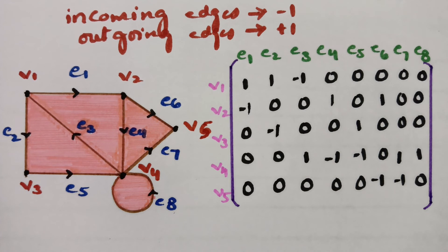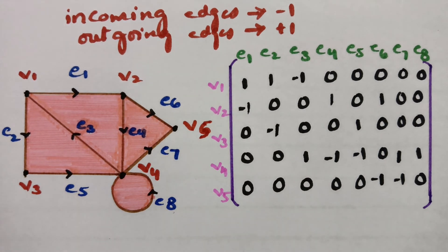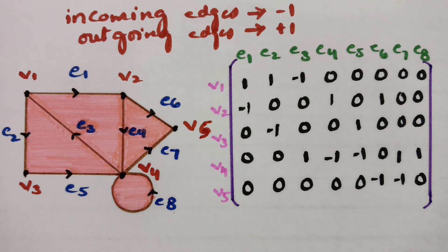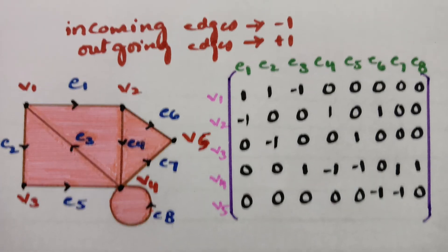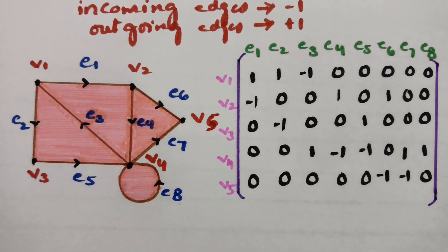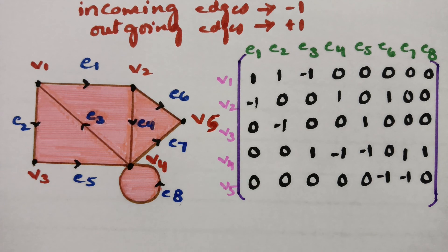This is how we represent the incidence matrix. For all incoming edges keep minus 1, for all outgoing edges keep plus 1, and if there is no connection with any remaining edges keep 0. Hope you all understand. Thank you for watching — if you liked it, please share it with friends, subscribe to this channel, and watch the playlist for more helpful videos.